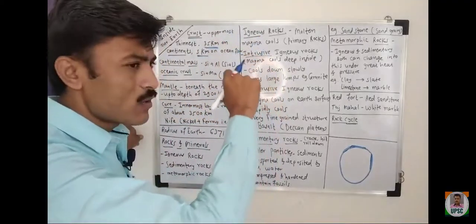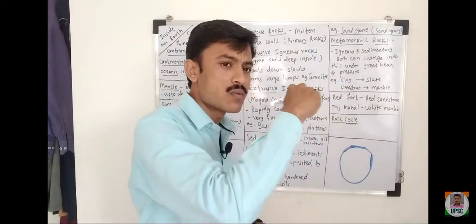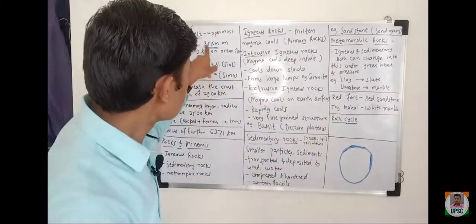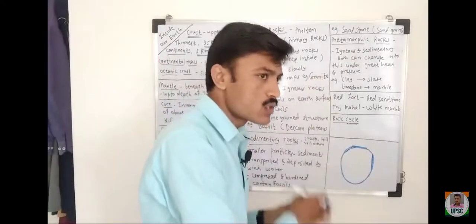So that 35 km is only on the continents. Means when there are the mountains, when there are the plateaus, there is 35 km of the crust. And 5 km is on the ocean floor. Remember this.